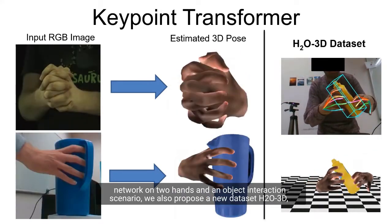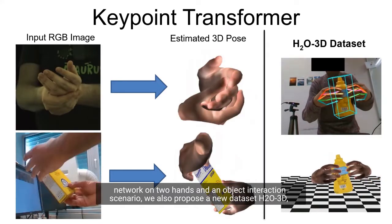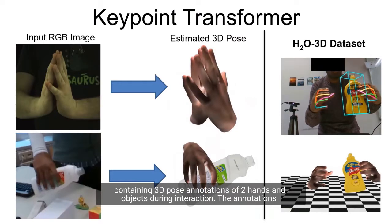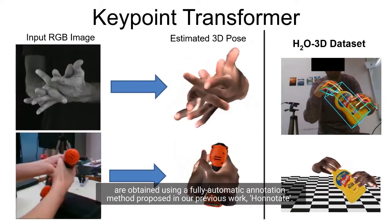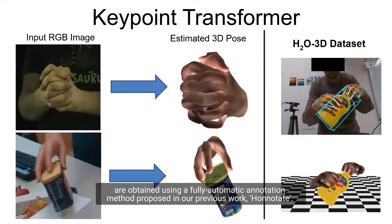To train our network on two hands and an object interaction scenario, we also propose a new dataset H2O-3D containing 3D pose annotations of two hands and an object during interaction. The annotations are obtained using a fully automatic annotation method proposed in our previous work.